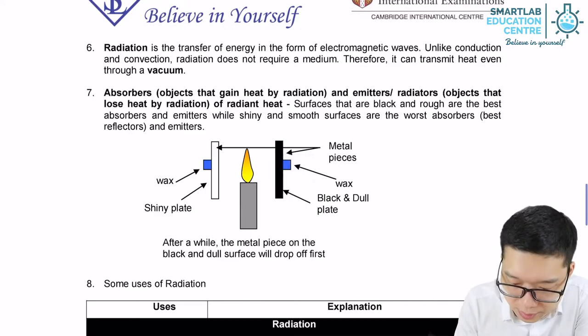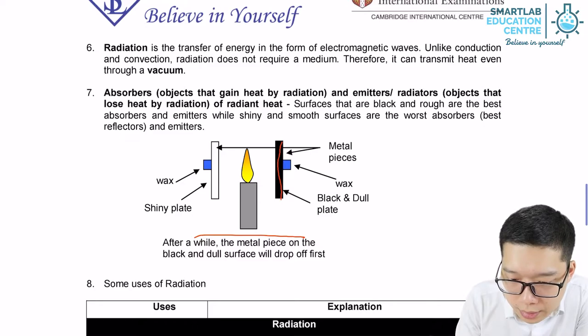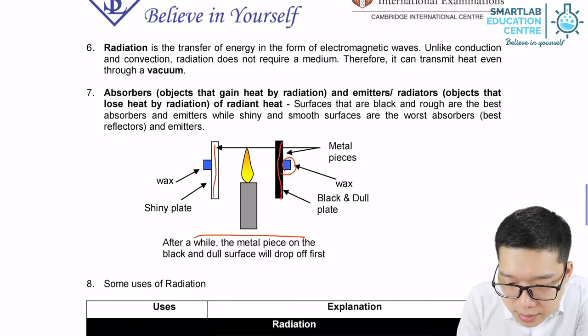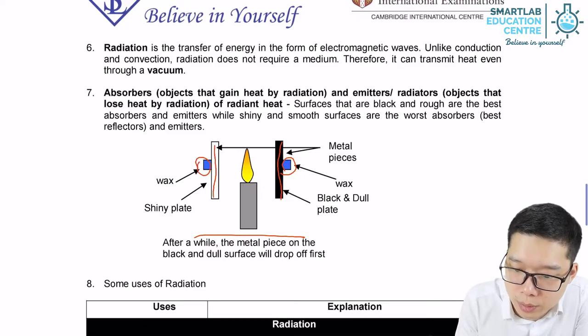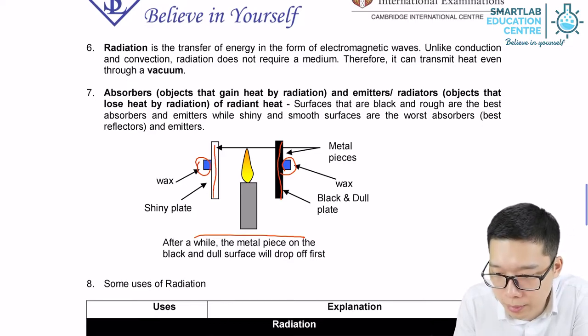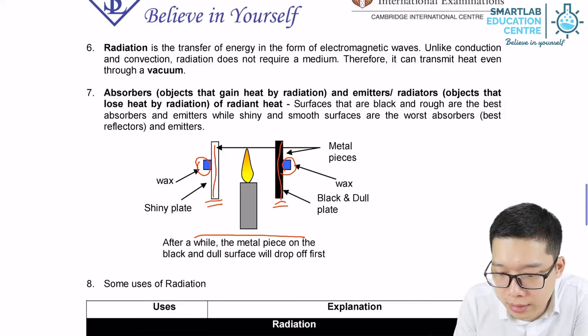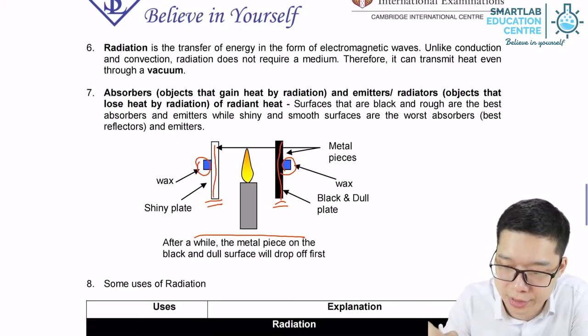So the experiment over here. Use the metal plate and the shiny plate. We put a wax, attach them outside the plates. So after a while, the wax will melt. But the color for the metal plate will affect the speed of radiation.